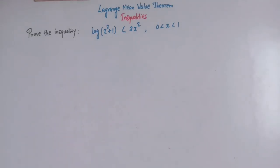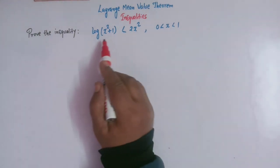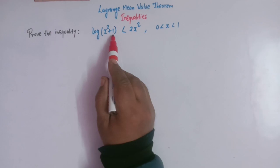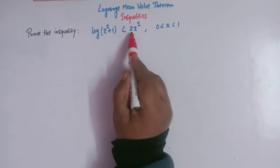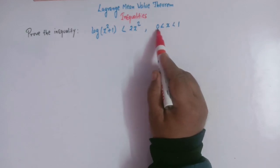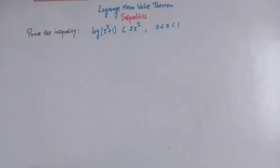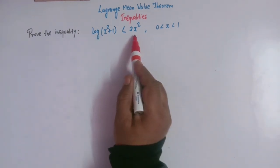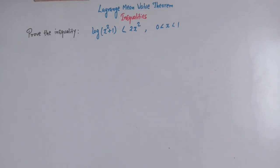Hello viewers. In today's class we are going to discuss yet another important inequality which will be proved using the Lagrange's Mean Value Theorem. We have to prove this inequality: log of x² + 1 is less than 2x² for all x which lies between 0 and 1. So let us start.